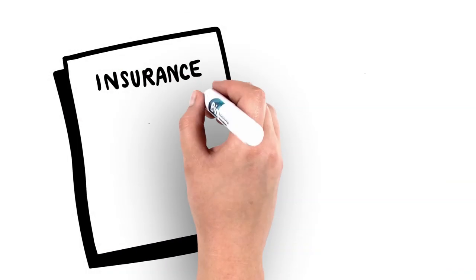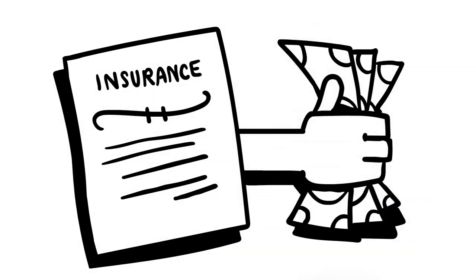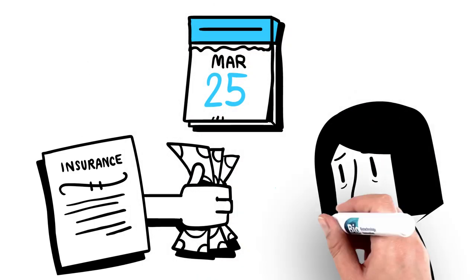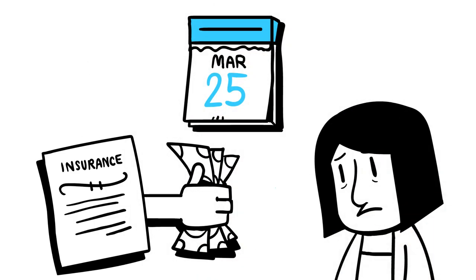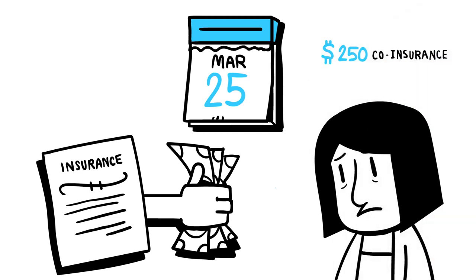Her insurance plan pays nothing and receives a $250 rebate from the drug maker. After a couple months, Joni reaches her deductible. But now, she has to pay a 50% co-insurance requirement, or $250. Her insurance plan also pays $250, but receives another $250 rebate from the drug maker.